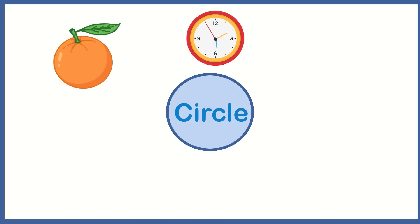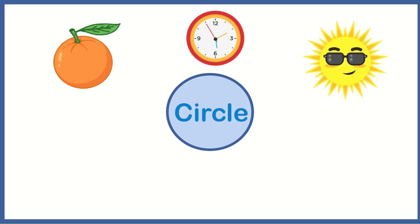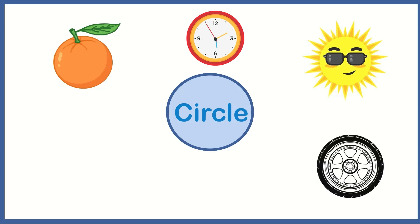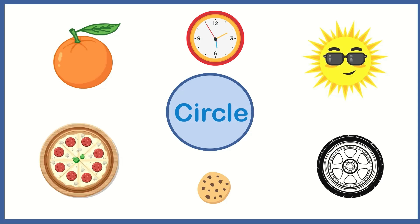A clock can be a circle. The sun looks like a circle. A tire is round and looks like a circle. The cookie looks like a circle. And here's a whole round pizza — and it is a circle.